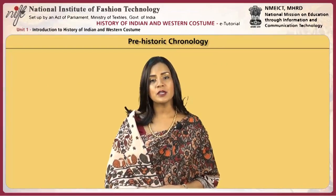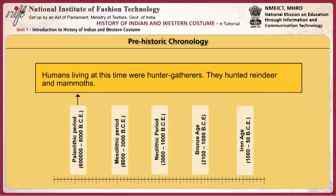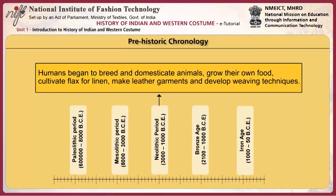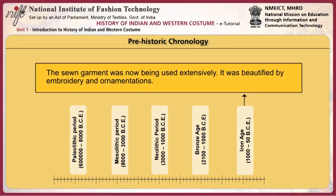Here is the prehistoric chronology of humans. Humans living at this time were hunter-gatherers who hunted reindeer and mammoths. Humans became advanced hunters and began fishing. They began to use animal fur and skin for protection. Humans began to breed and domesticate animals, grow their own food, cultivate flax for linen, make leather garments and develop weaving techniques. Humans started trade and seafaring. Craftsmen developed various artistic skills and cultivated aesthetics. The sewn garment was now being used extensively, beautified by embroidery and ornamentations.